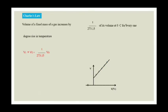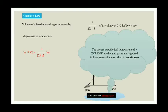To plot a graph between volume and temperature for Charles' law, you get a straight line. If we extrapolate that line, it joins the x-axis where the temperature is −273°C. This temperature is what we call 0 Kelvin, which uses the Kelvin scale of temperature. 0 Kelvin is called absolute zero: the lowest hypothetical temperature of −273.15°C at which all gases are supposed to have zero volume.